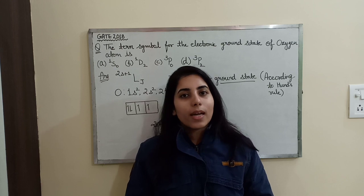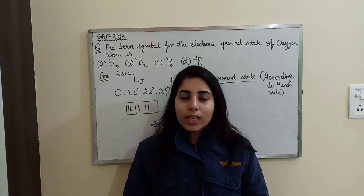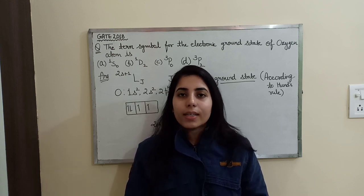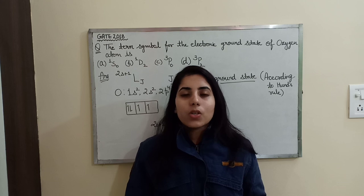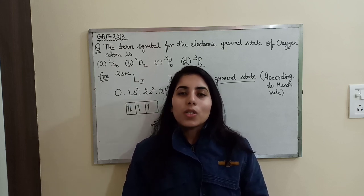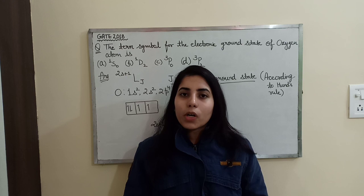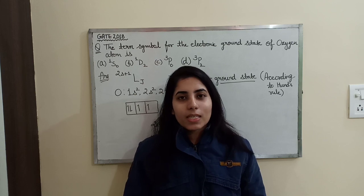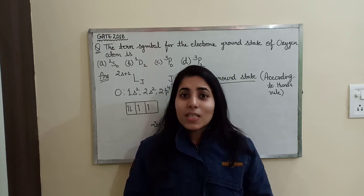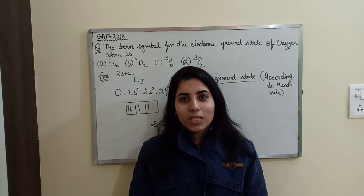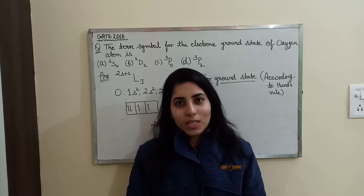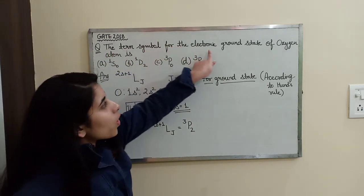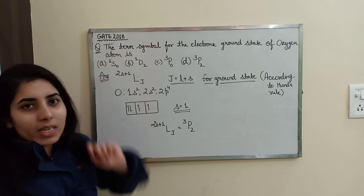We will observe each and every step we need to take to solve this kind of question. This type of question can also be expected in your upcoming CSIR NET physics exam — in previous years these questions have been asked as well. So this is going to be a very important video for both the upcoming CSIR NET and GATE physics exams. The question is: the term symbol for the electronic ground state of the oxygen atom is — and these are the options given to us.